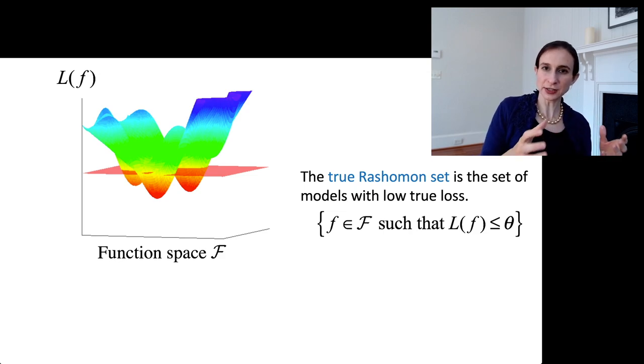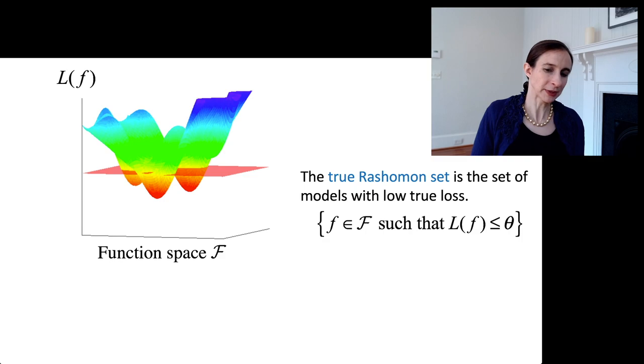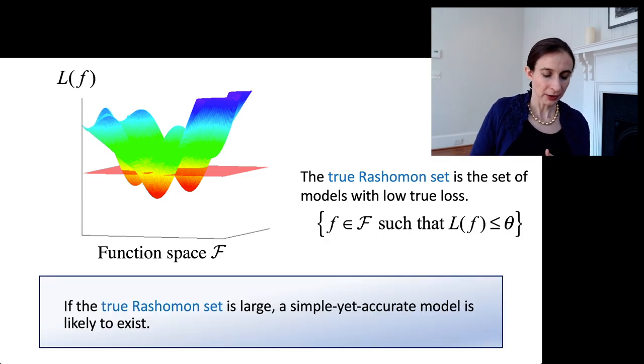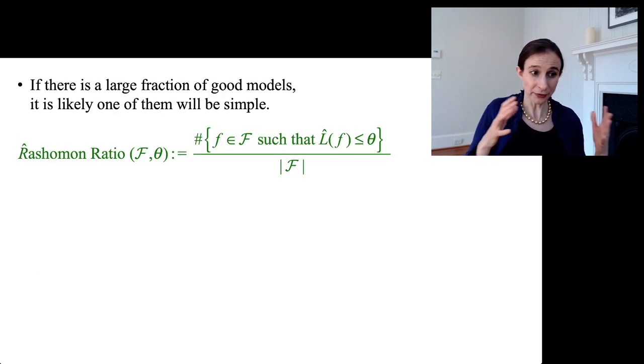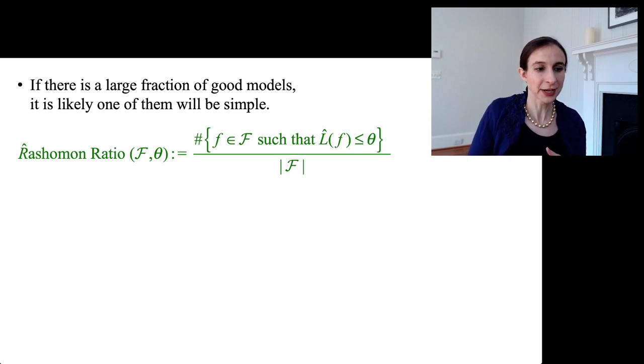Now if the set of functions underneath that plane is large, that means the true Rashomon set is large. There are a lot of models with low true loss. Okay, so Lesia's point is that if the true Rashomon set is large, a simple yet accurate model is probably in that Rashomon set somewhere. Okay, so if there's a large fraction of good models, it's likely one of them will also be a simple model.